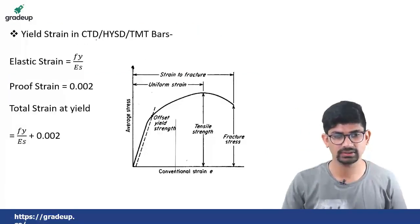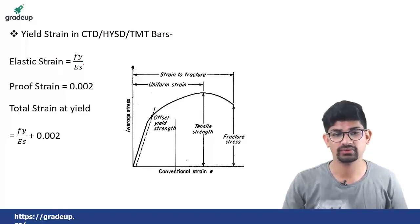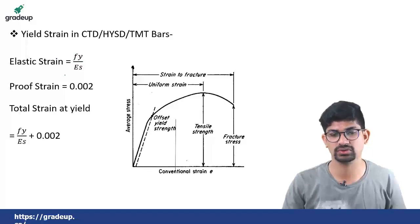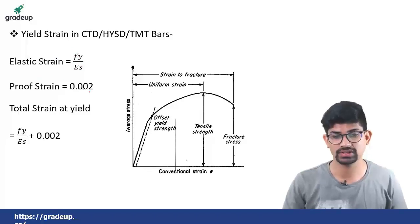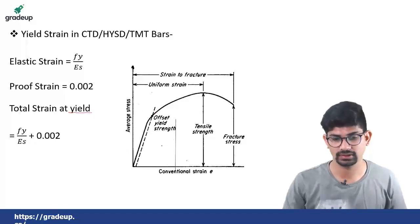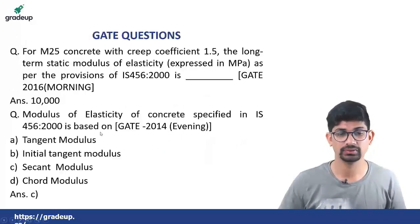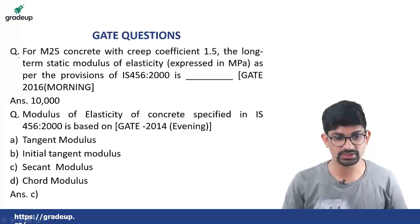Regarding yield strain in CTD (cold treated die bars), HYSD (high yield strength deformed bars), and TMT (thermomechanically treated bars): the elastic strain is Fy divided by Es, as can be seen from the stress formula where Fy is stress and Es is elastic modulus. The proof strain is 0.002, so the total strain at yield becomes Fy divided by Es plus 0.002. This corresponds to the stress-strain curve of steel.